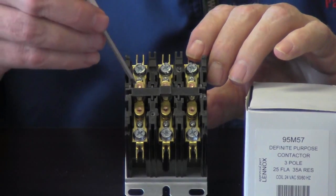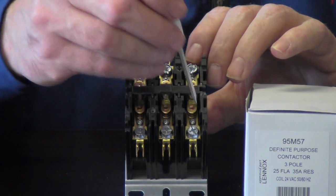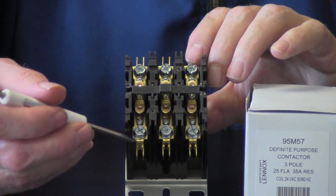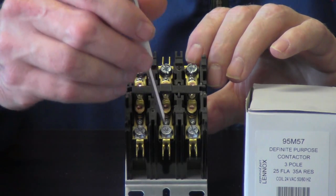You can see in here our three poles. We've got one here, here and here. This would be your L1, L2 and L3.